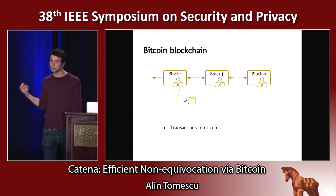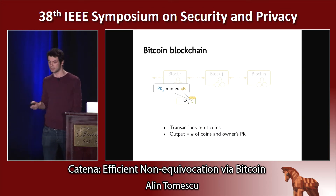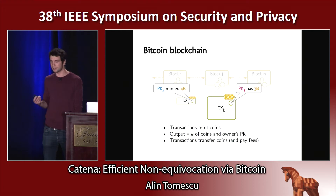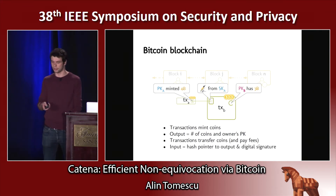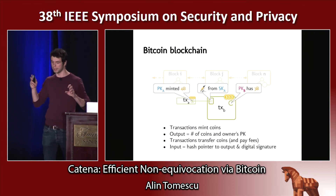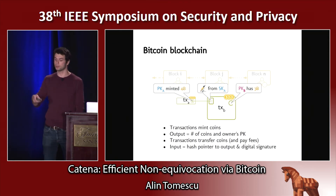Let's talk about Bitcoin transactions. They have two purposes. The first purpose is to mint coins. Transaction A says public key Alice minted four Bitcoins, and it has a transaction output — that little circle — which specifies the number of coins and who owns them. The second purpose is to transfer coins. Alice might want to give three coins to Bob and leave a fee to the Bitcoin miners. Alice creates transaction B with an output that says PKB has three Bitcoins. We link transactions via a transaction input, which has a hash pointer to the output being spent and a signature that authorizes the transfer.